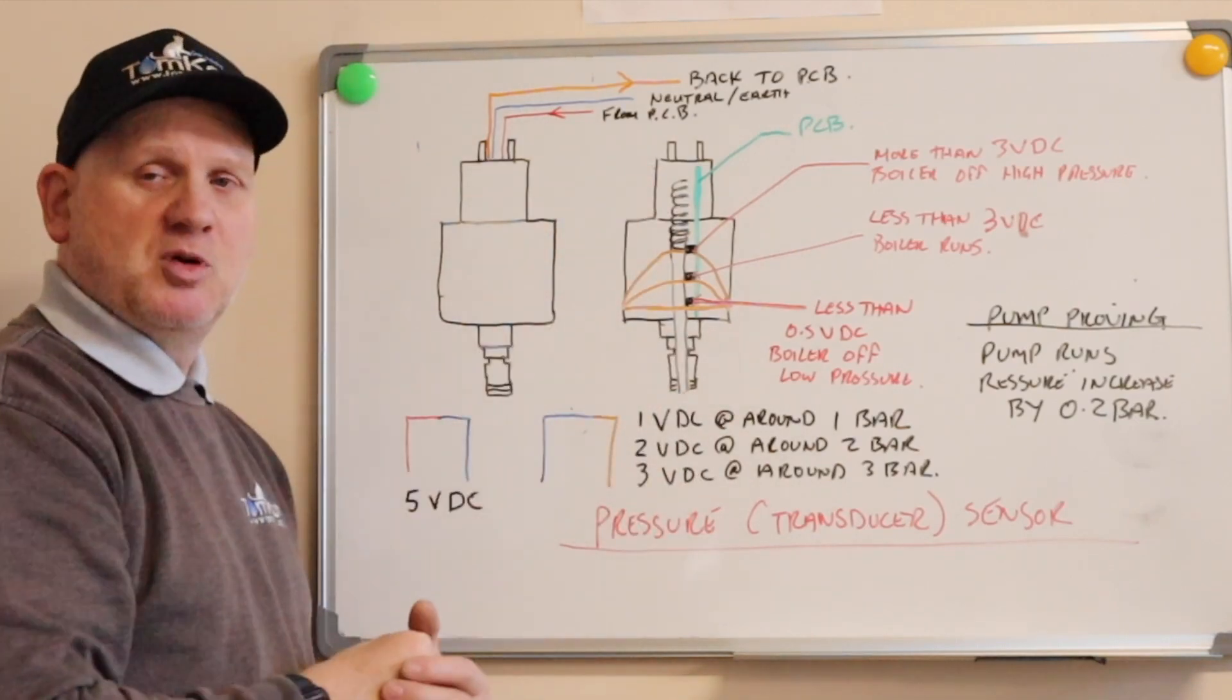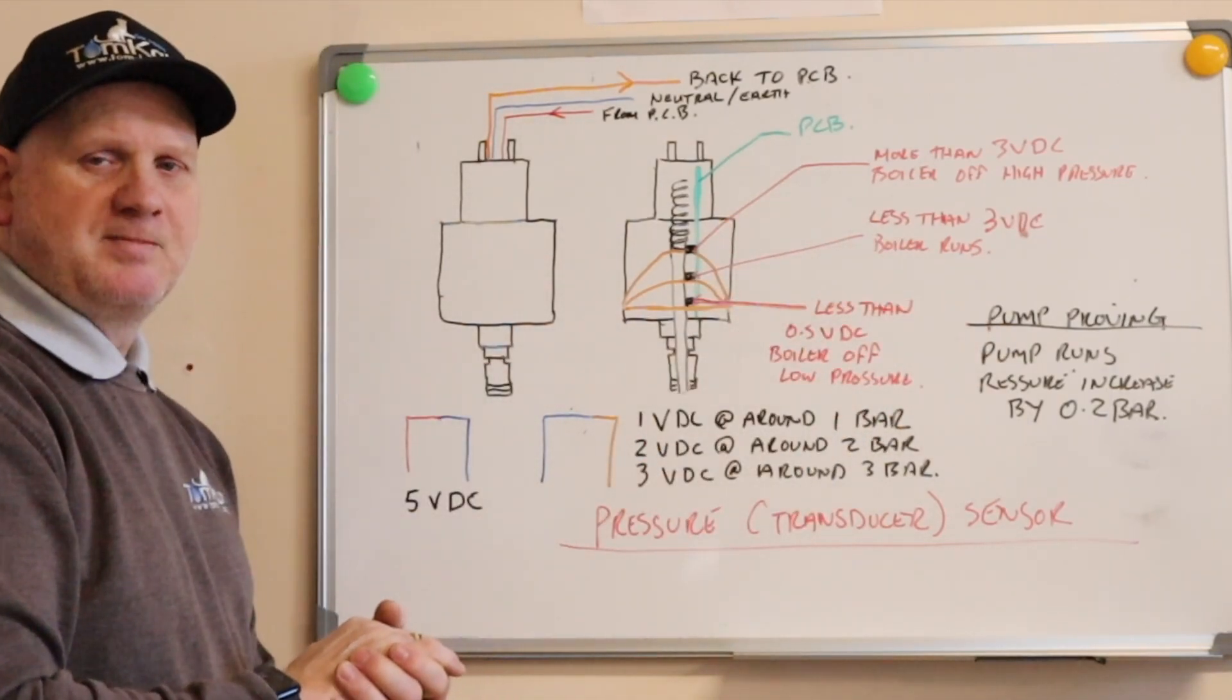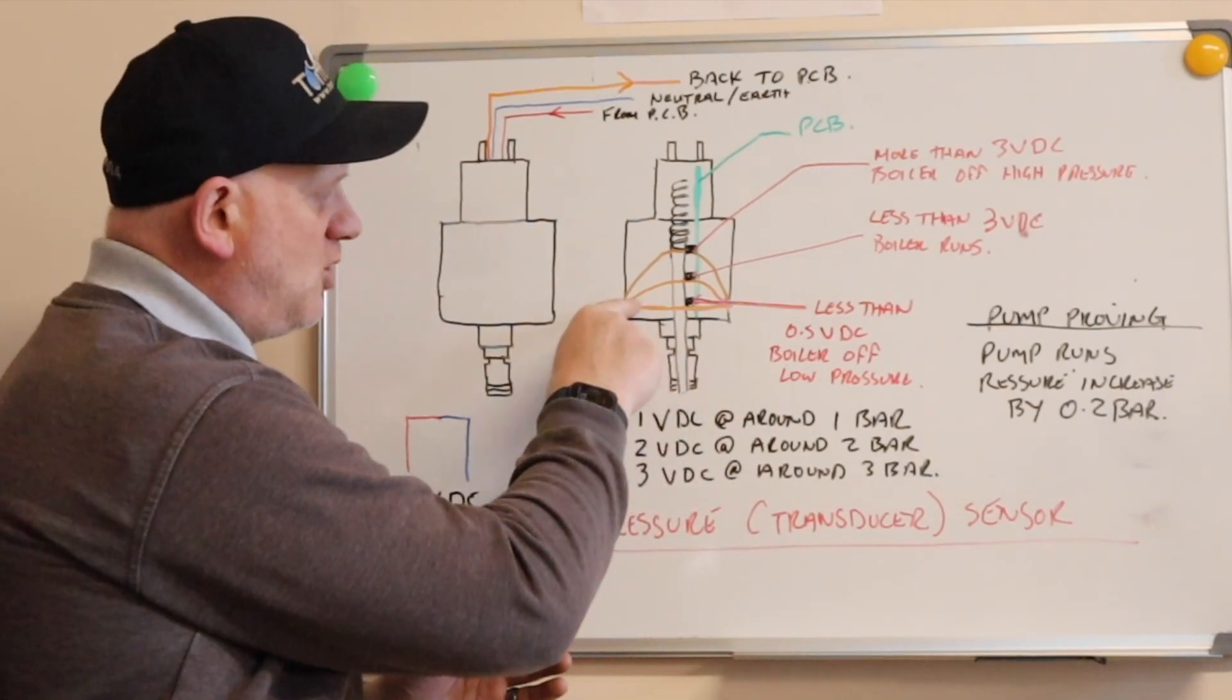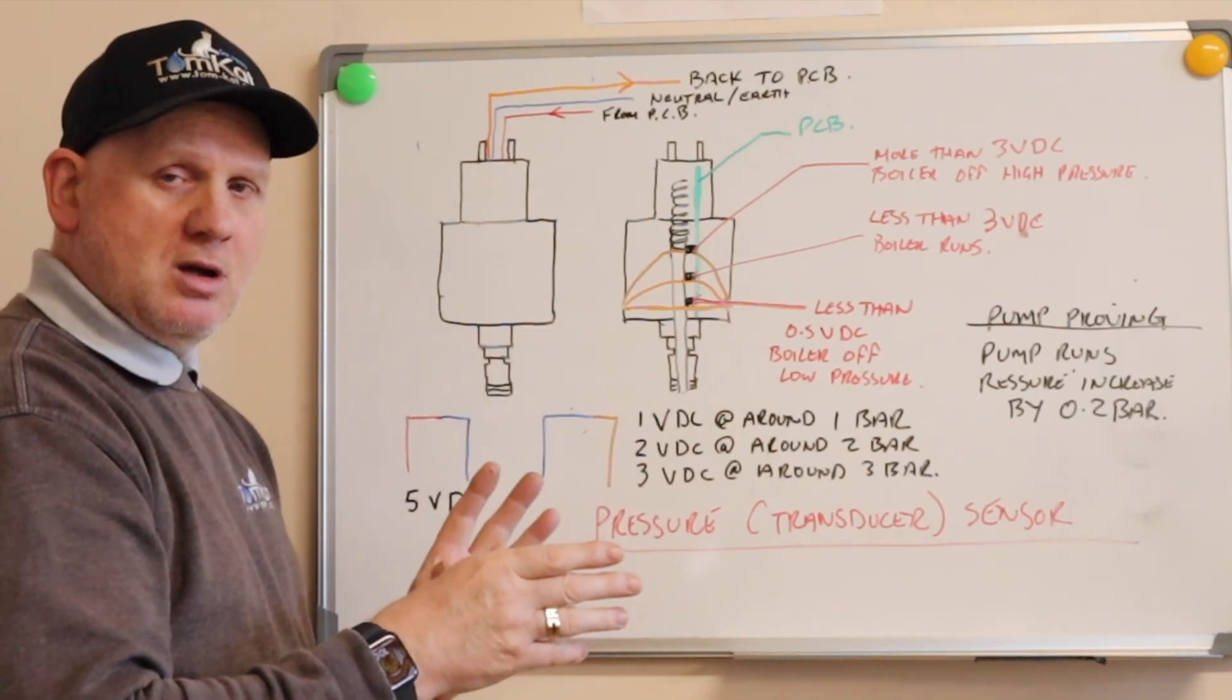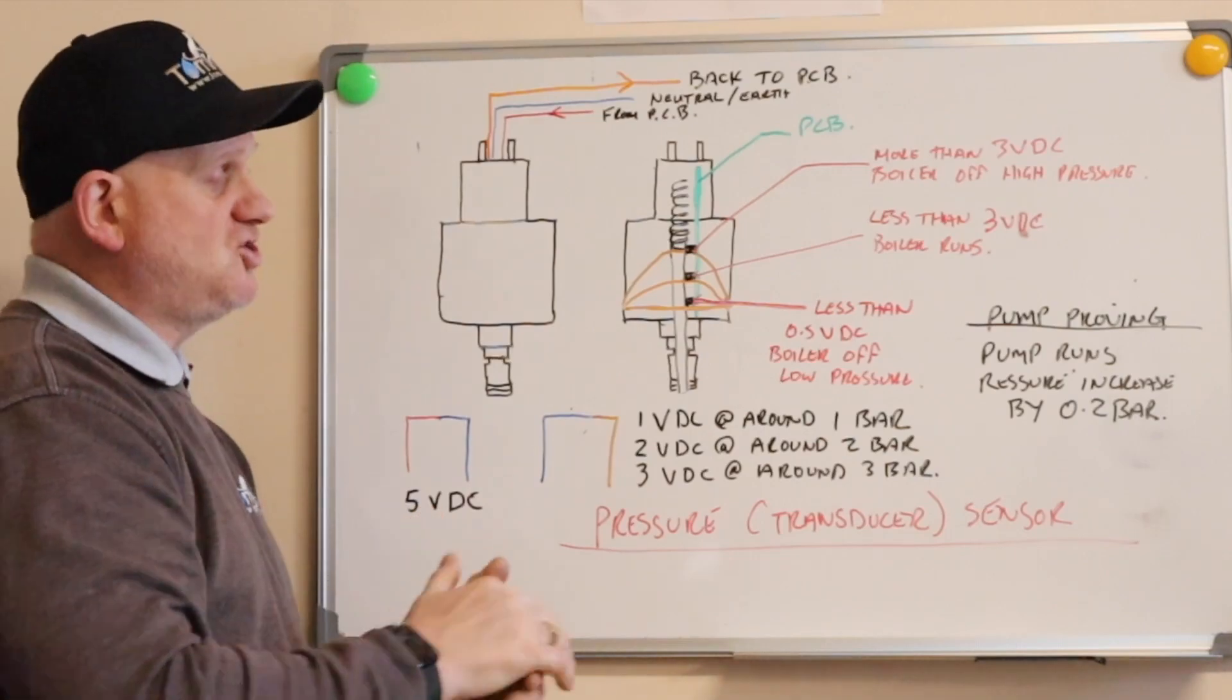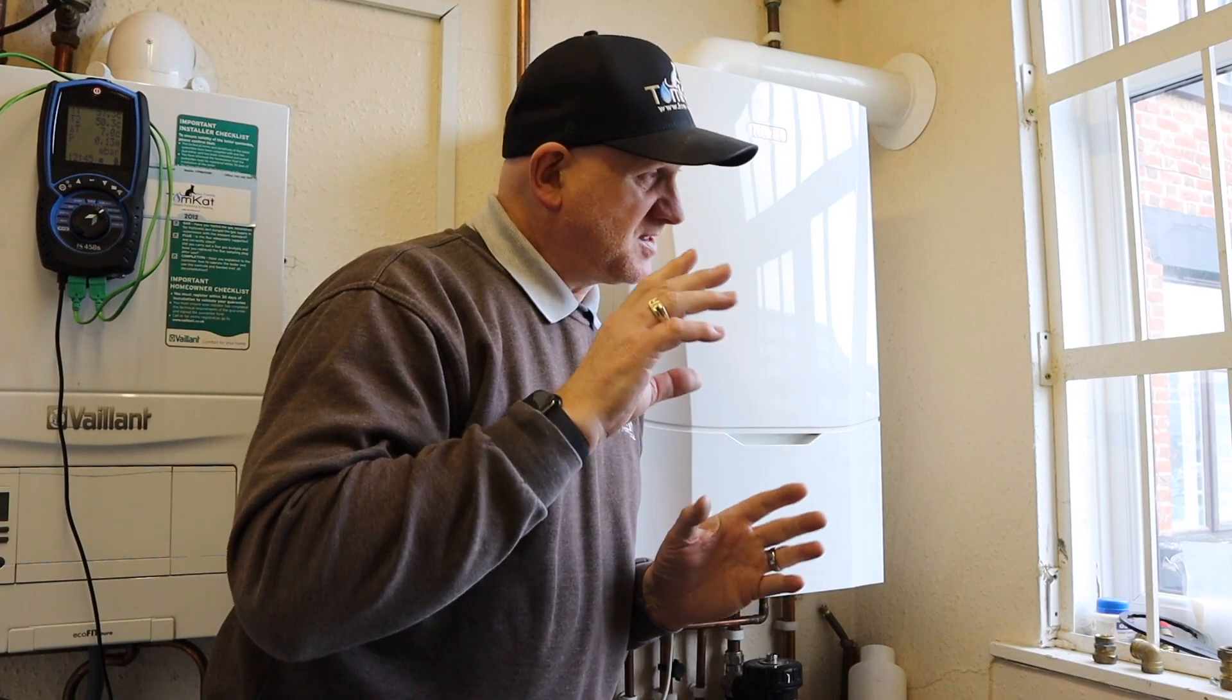Now the transducer can also do another job, which is the pump proving. So when the boiler turns the pump on first to see whether the pump's seized or there's any water in the system, it will move this little diaphragm by about 0.2 bar. And it'll know it's sending 5 volts DC, it gets about 0.2 volts coming back or a change. It knows there's water in the system and it knows the pump is working correctly.